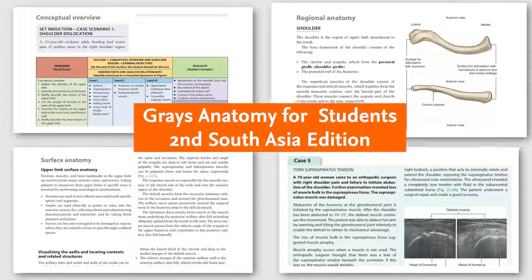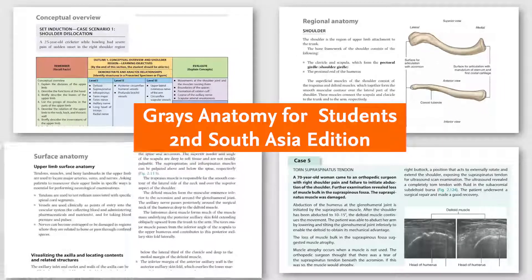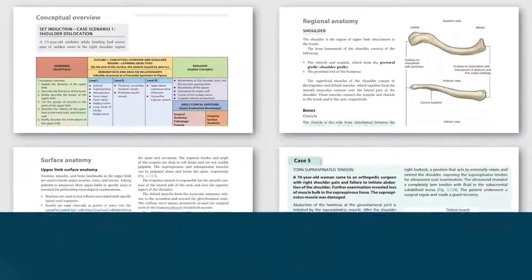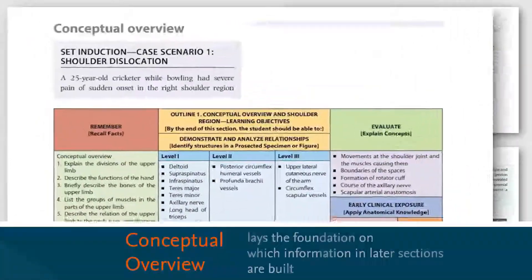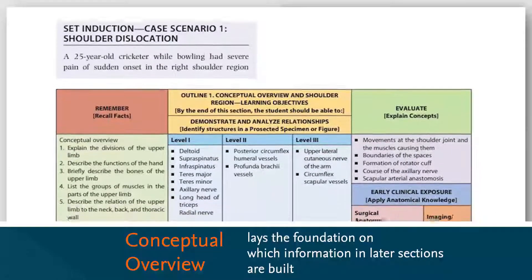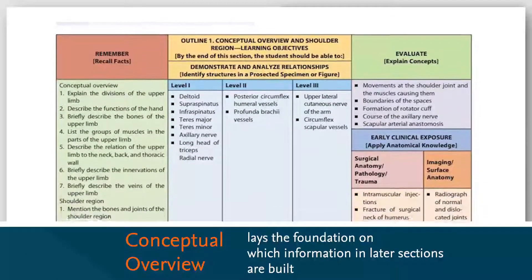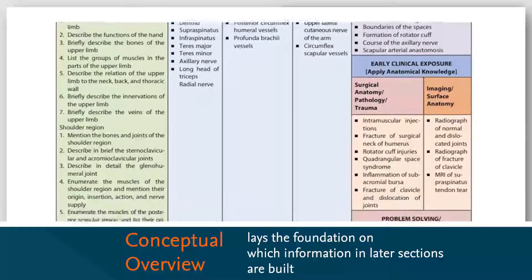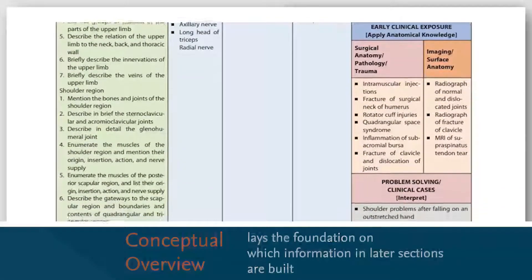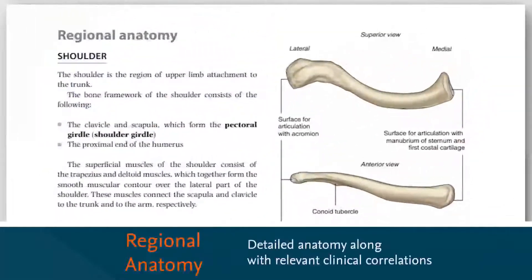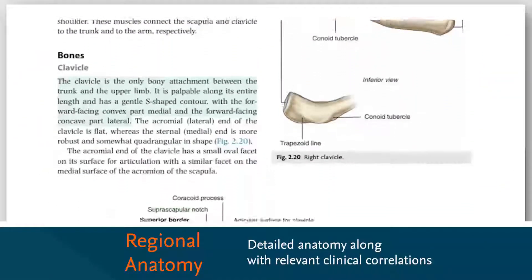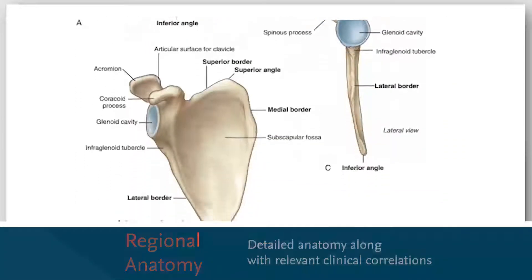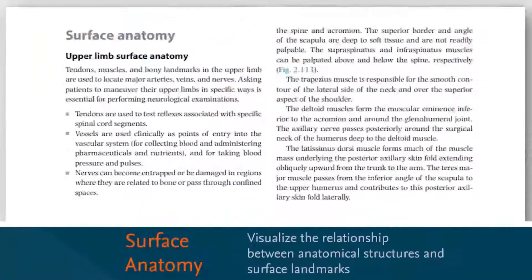Each regional anatomy chapter consists of four consecutive sections: conceptual overview, regional anatomy, surface anatomy, and clinical cases. The conceptual overview provides the basis on which information in the later sections is built. This section can be read independently by students who require only a basic level of understanding.